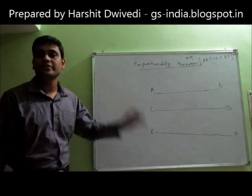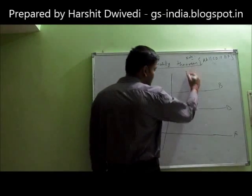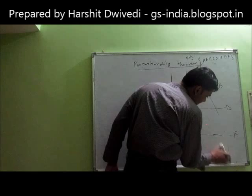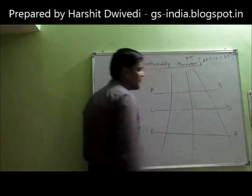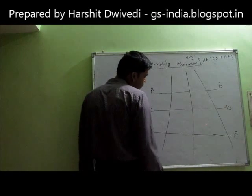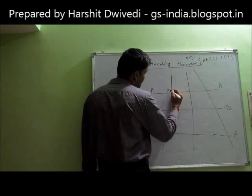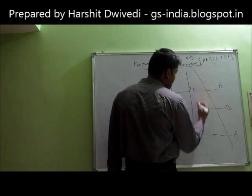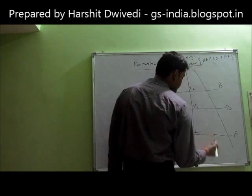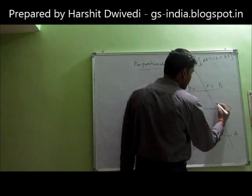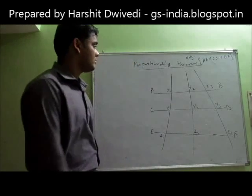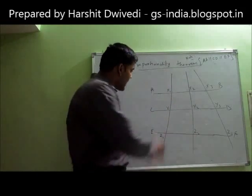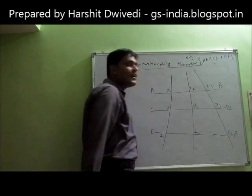I have drawn three transversal lines. The intersection points are labeled X1, Y1, Z1 on the first transversal, X2, Y2, Z2 on the second transversal, and X3, Y3, Z3 on the third transversal. These are the three parallel lines AB, CD, and EF, and across them I have drawn these transversal lines X1Z1, X2Z2, and X3Z3.